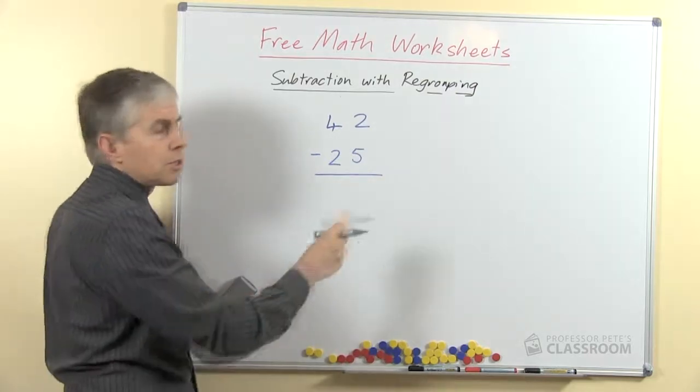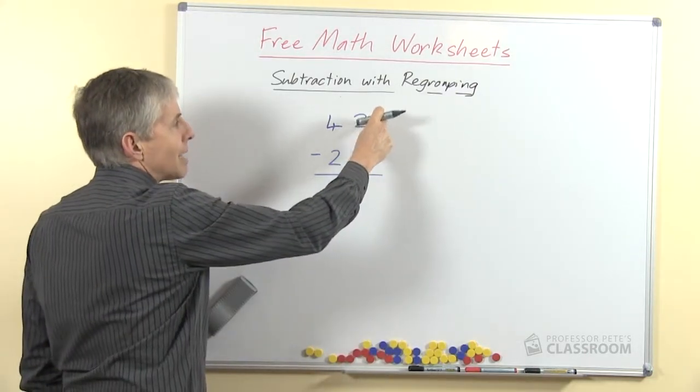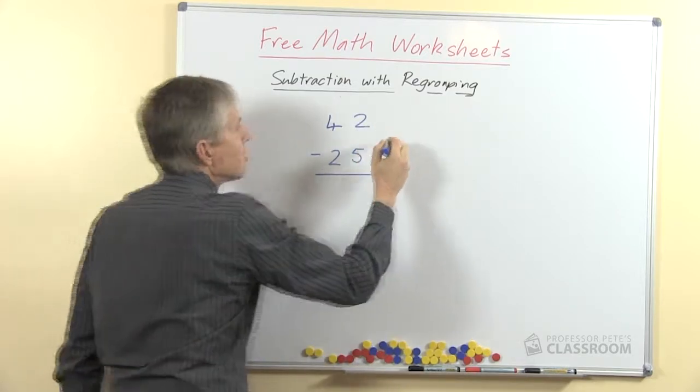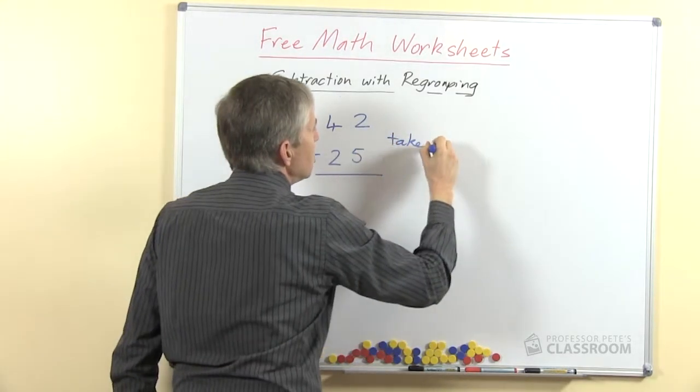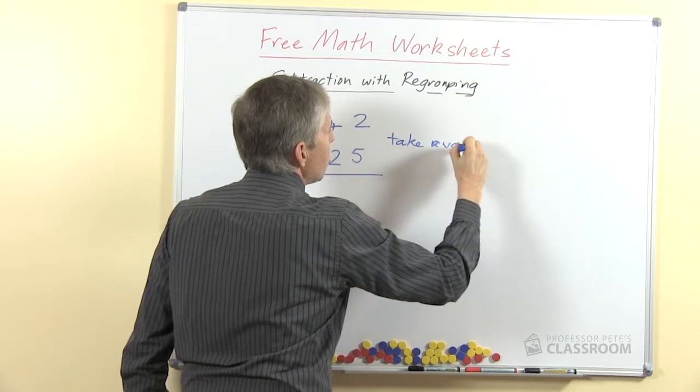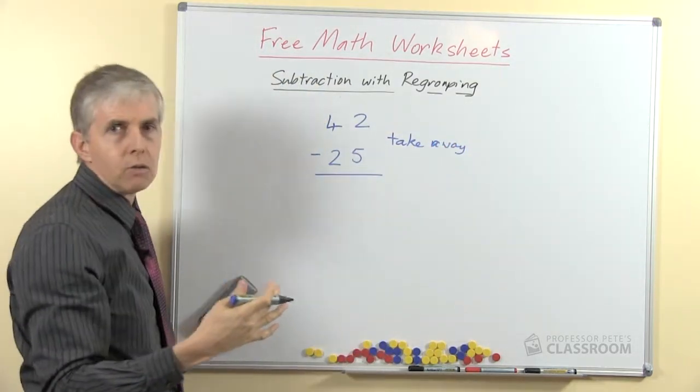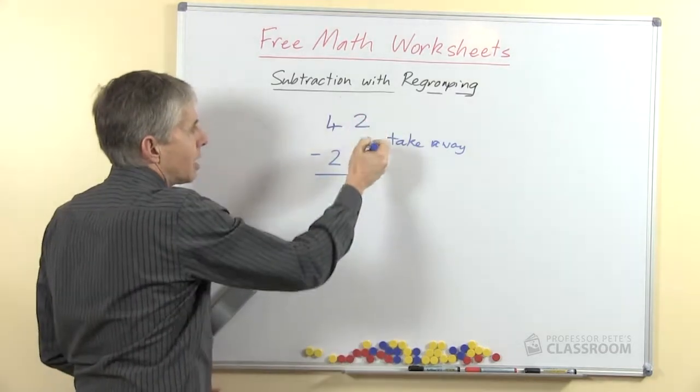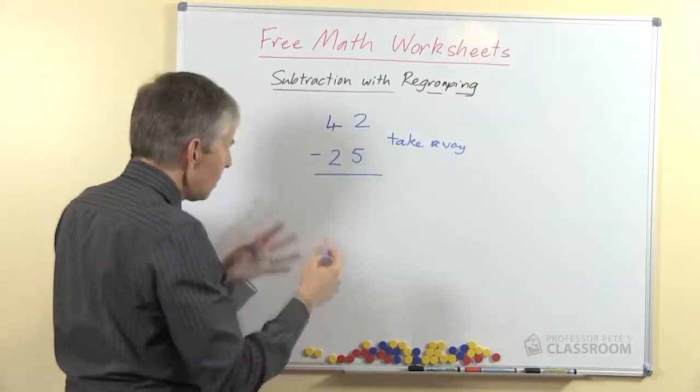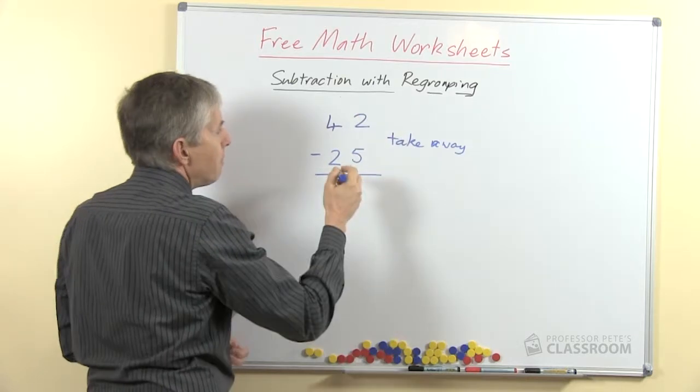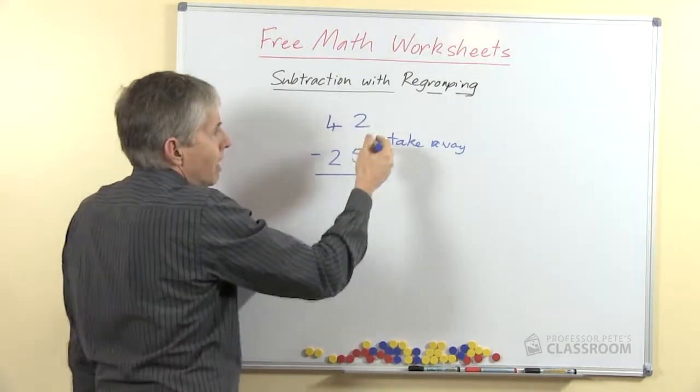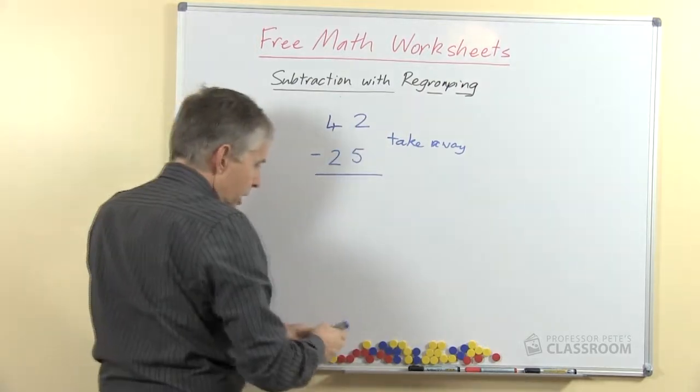So I prefer to tell students to focus on the first number as the number that we have at the moment and then we are going to take away. So I deliberately use the words take away as common everyday language rather than subtract, and talk about 2 take away 5. Can we do that? Alright, so quickly we can do it but only if we do regrouping, or we can say no there aren't enough, so we're going to regroup.